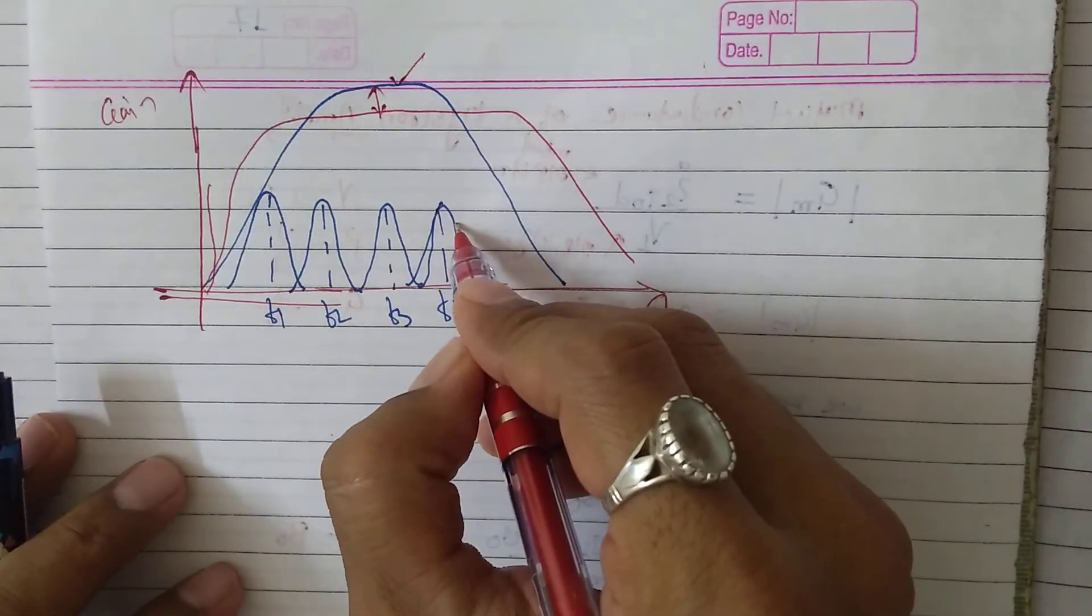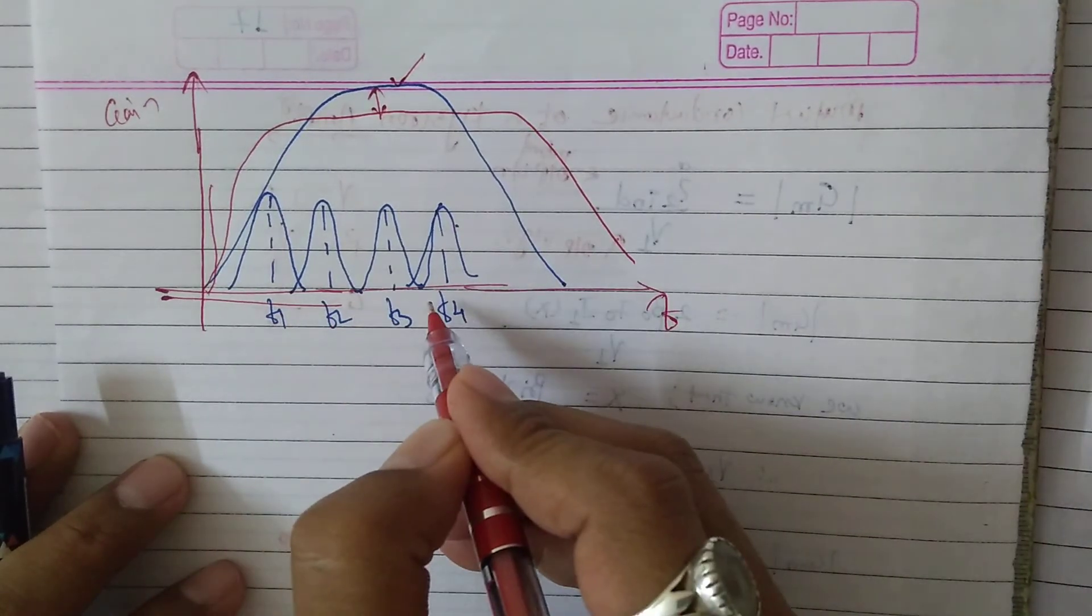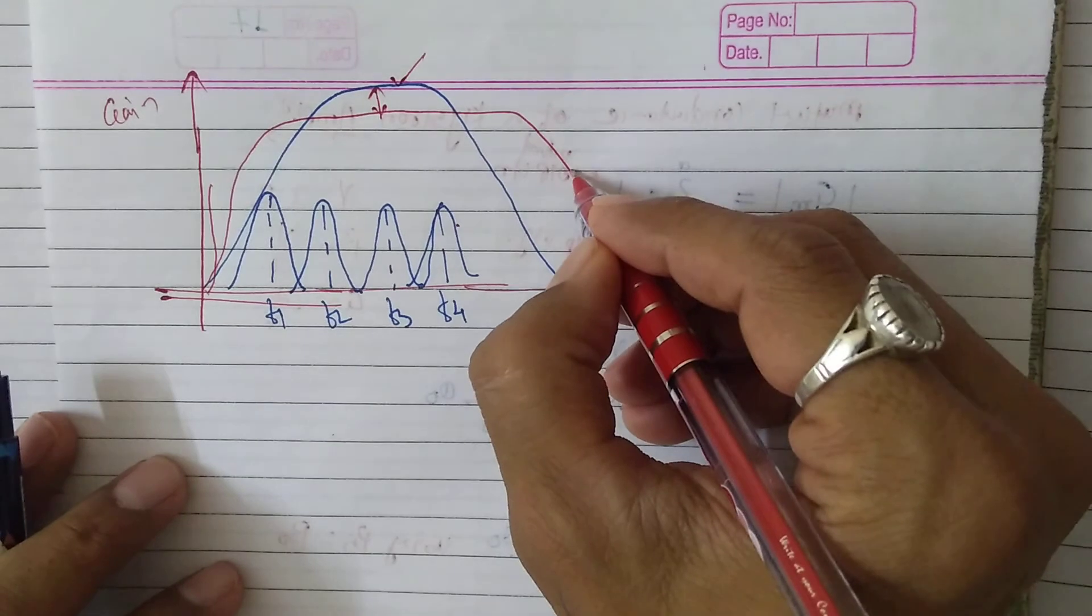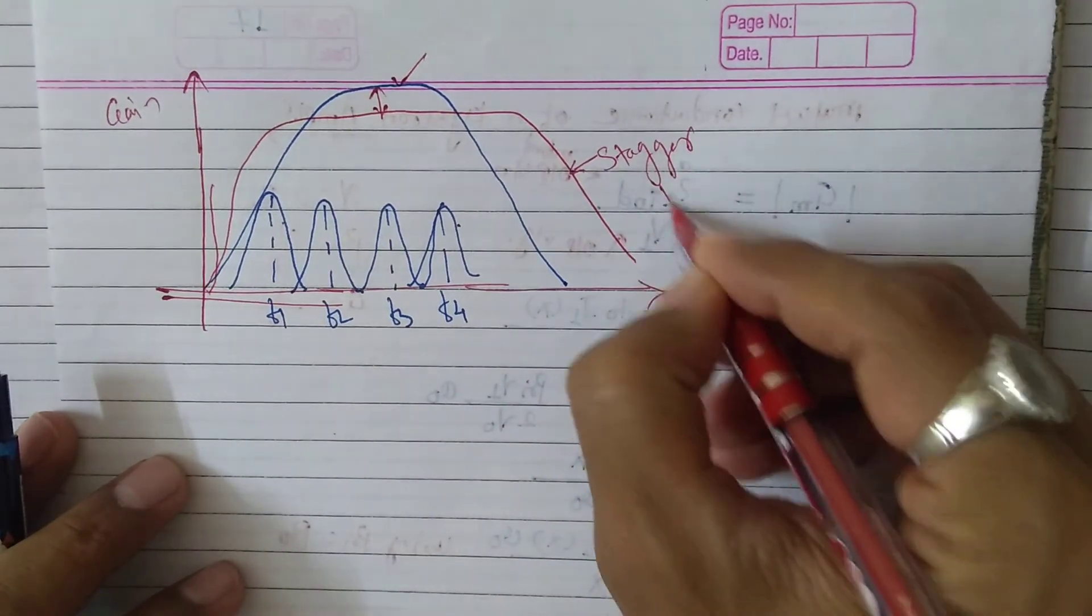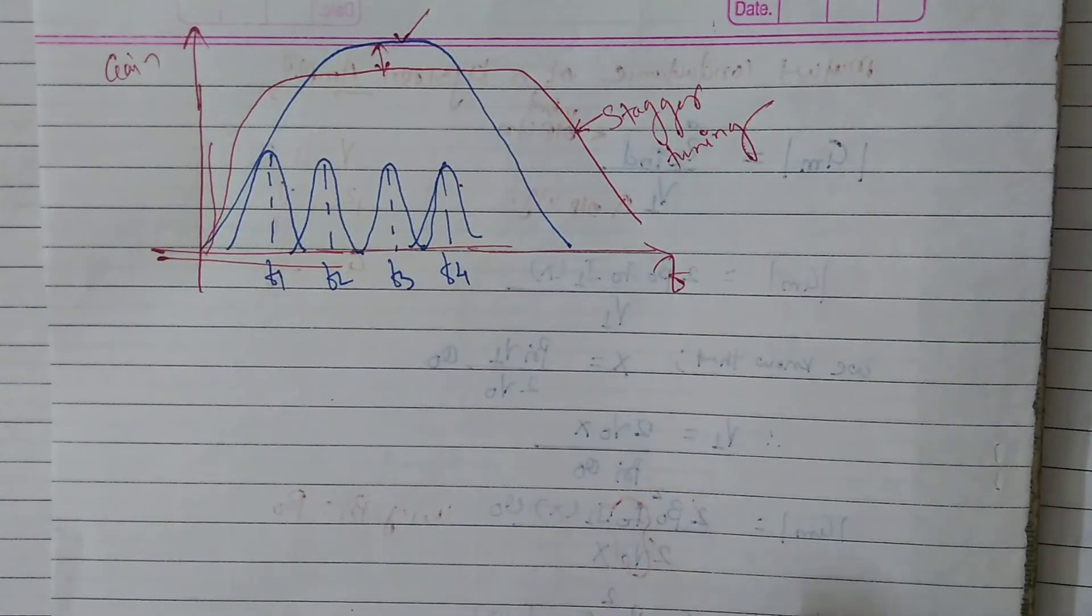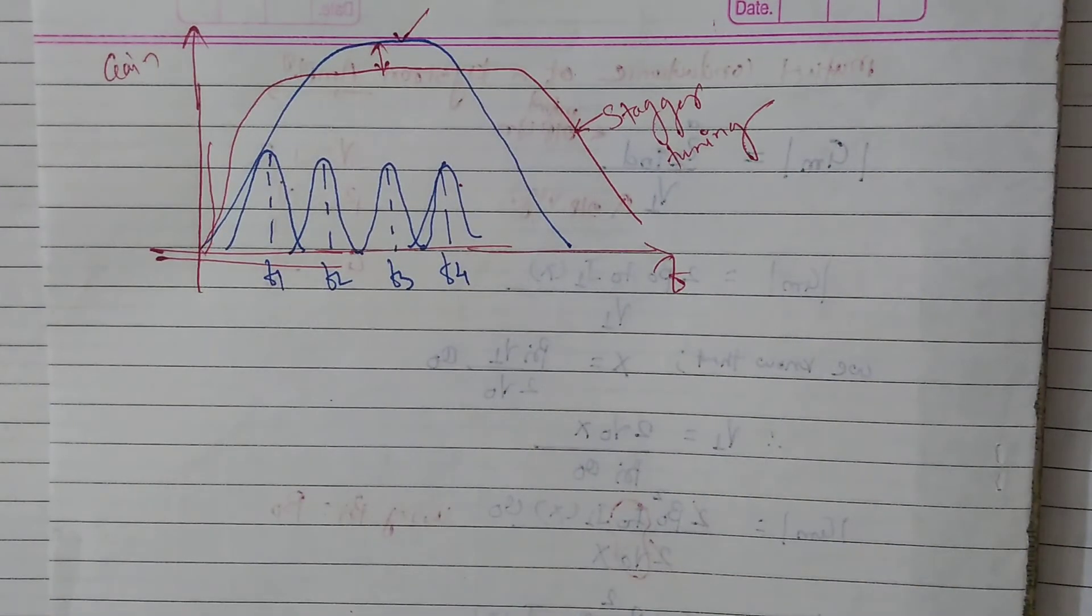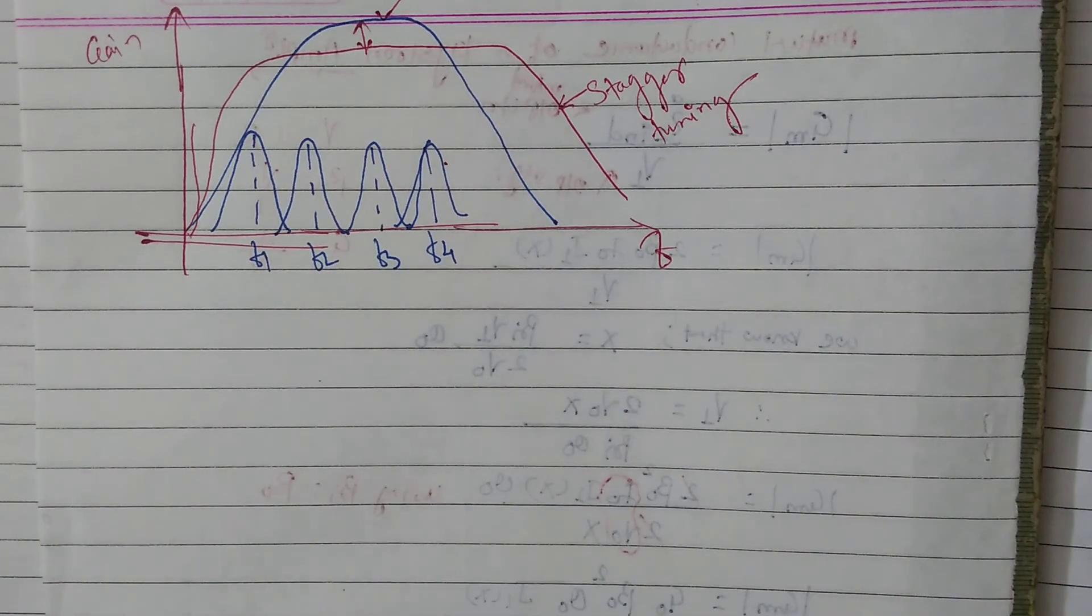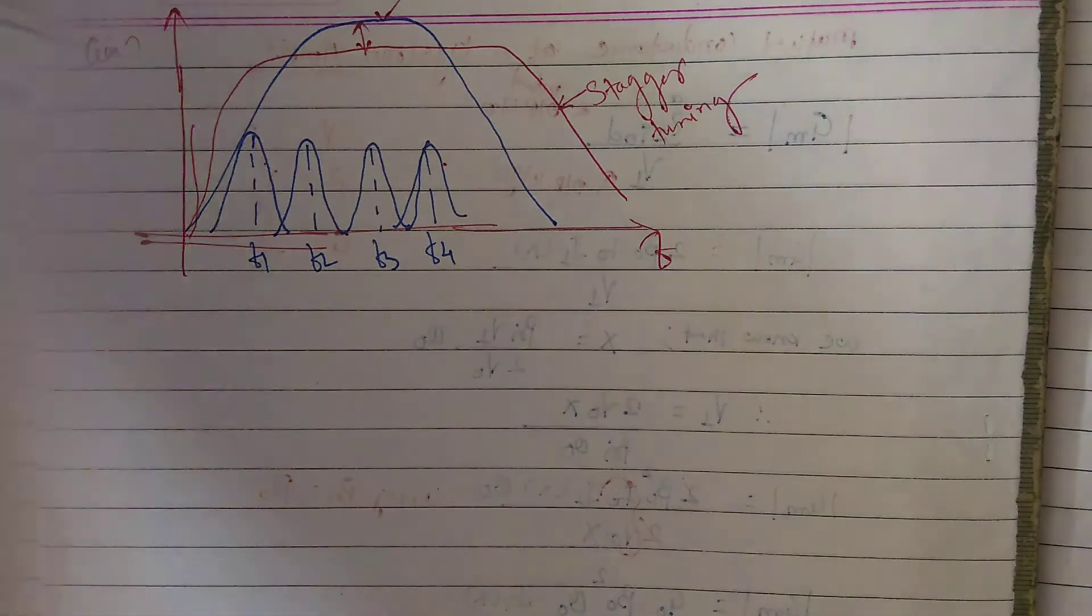This concept of designing different cavities at slightly different design frequencies is called stagger tuning. This approach is generally used for UHF TV transmitter output tubes in multi-cavity klystron amplifiers.